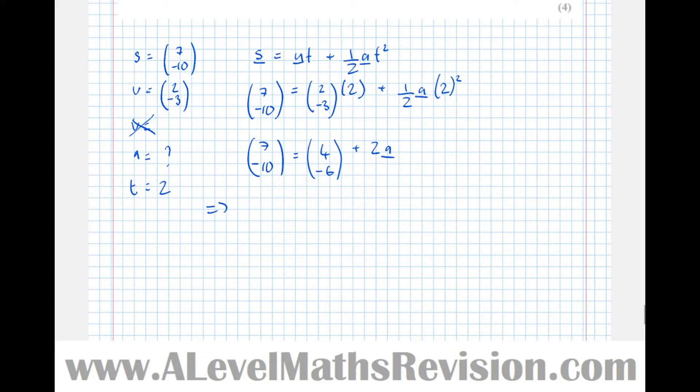Rearranging that, take 4 minus 6 from this, so 7 take 4 is 3, and minus 10 minus minus 6 is minus 4, equals 2 lots of the acceleration. Then divide by 2, we get that the acceleration vector is 1.5 minus 2.